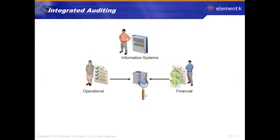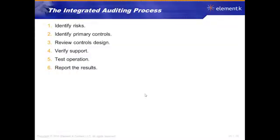Remember the different kinds of auditing — financial audit, operational audit, and the integrated audit. As an IS person you may not be involved with the financial side, but you might be involved in confirming the database is good, the data has integrity, nobody tampered with it, and it's remaining confidential — so the financial audit can be done with a level of assurance. The integrated auditing process: identify the risks, what controls are in place, how are they designed, make sure they're being supported properly, test them, and report the results.